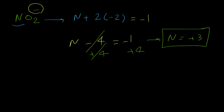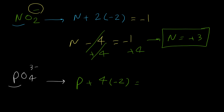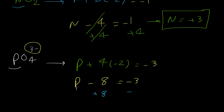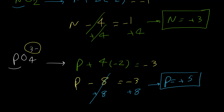Now let's find the oxidation number for phosphorus in the phosphate anion, PO4^3-. We have phosphorus and 4 oxygen atoms, each at -2. The sum must equal the charge of the ion, -3. So P + (4 × -2) = -3, meaning P - 8 = -3. Adding 8 to both sides gives phosphorus = +5. The oxidation number for phosphorus is +5.